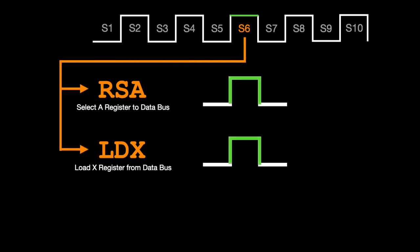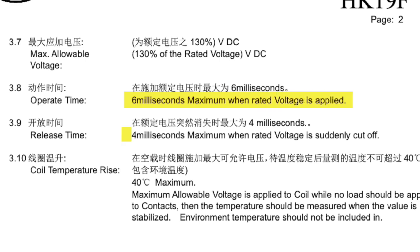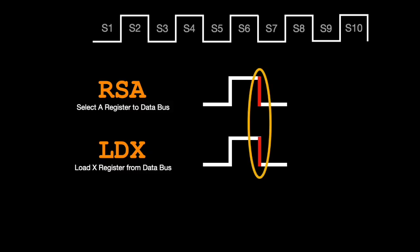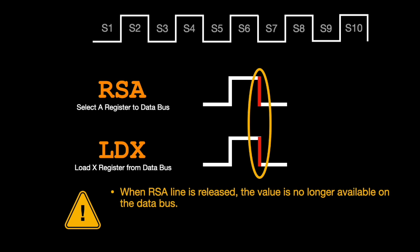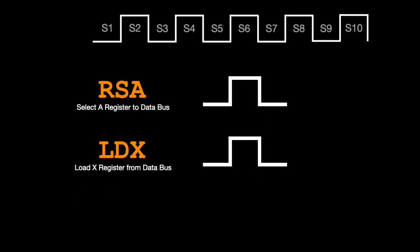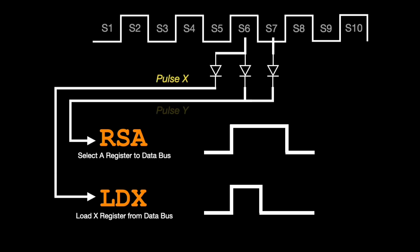This all looks good in theory, but our trusty relays are electromechanical devices and they have much slower and less accurate switching speeds than modern digital electronics, and this problem is only compounded when we are using many relays in tandem. There could be a problem during the falling edges when the control lines are deactivated. When the RSA control line is released, the value in the A register is no longer visible on the data bus. If this occurs even milliseconds before the LDX control line has deactivated, then the X register would be loaded with a null or zero value from the data bus. So we need to ensure that the LDX control line will be released before the RSA line. We can't reduce the duration of the LDX activation, but we can extend the RSA control signal one extra step using diode logic circuits to create new timing pulses to drive our hardware microcode.